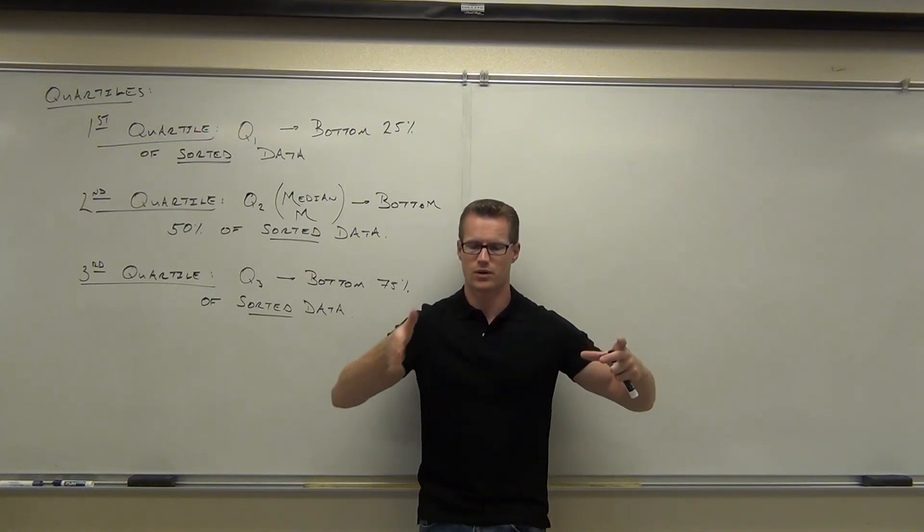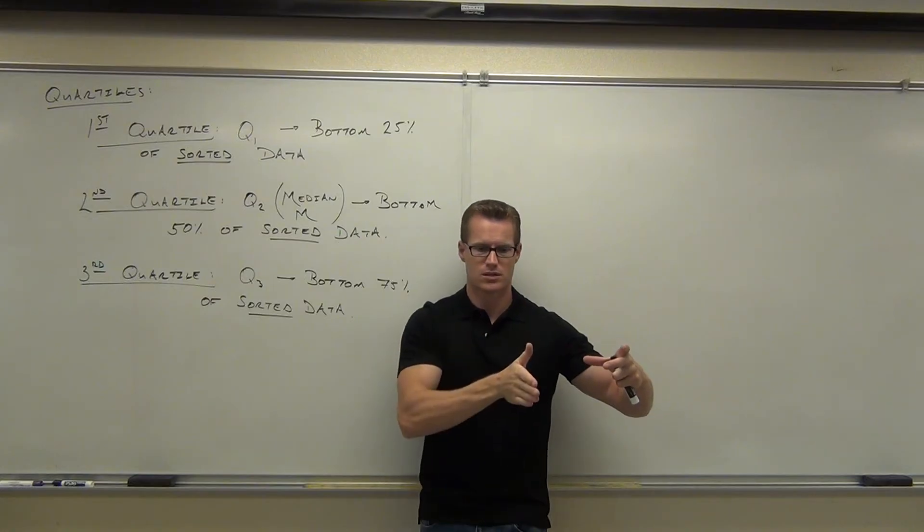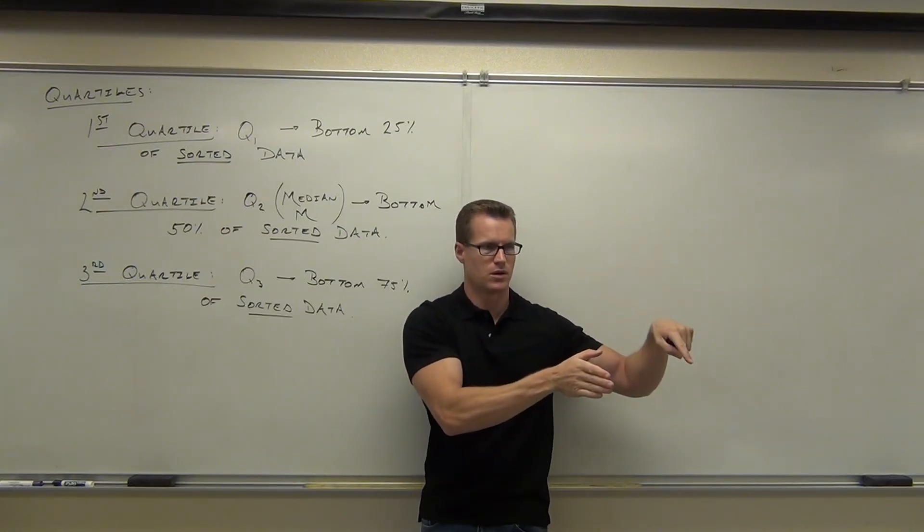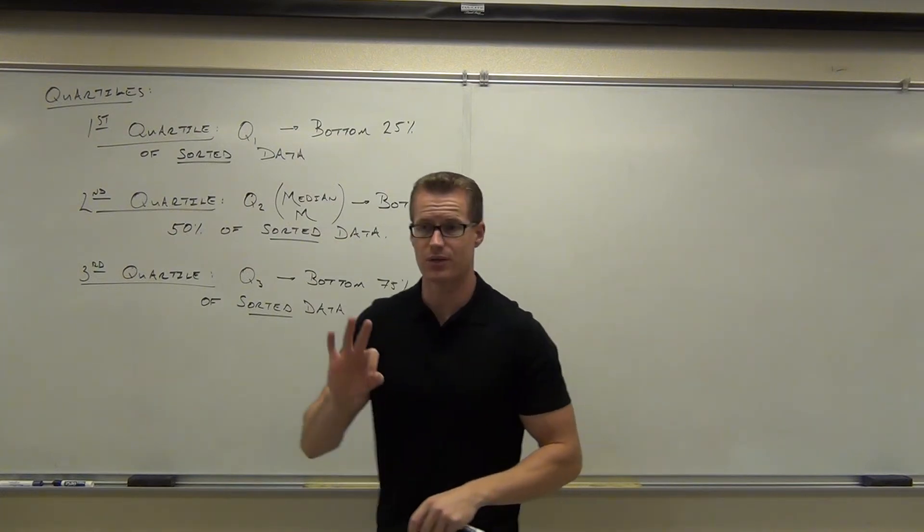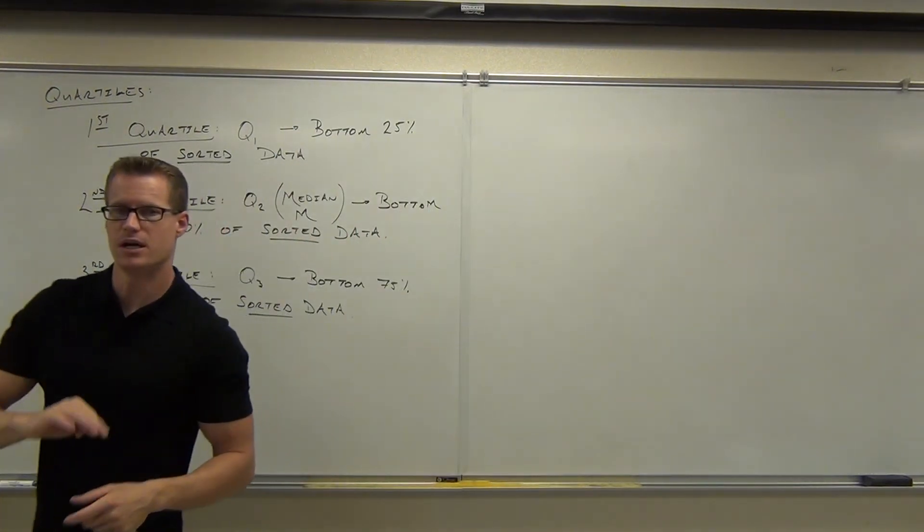So we're cutting our 100% into four quarters. We only need three slices to do that. Does that make sense? So we have all of our data. We're going, oh, first quarter, second quarter, third quarter, and that makes inherently a fourth, 25% section of that. So we only need three. Q1, Q2, which is the median, and Q3.